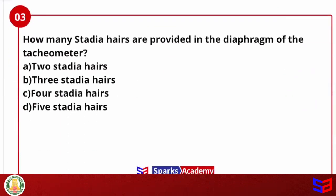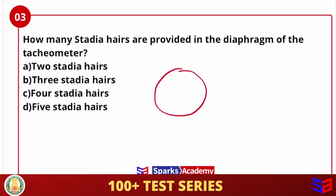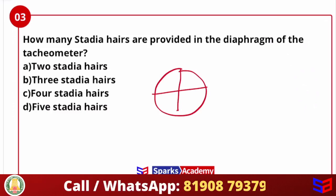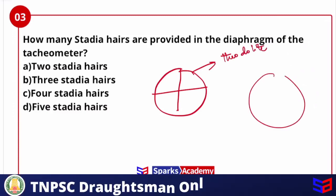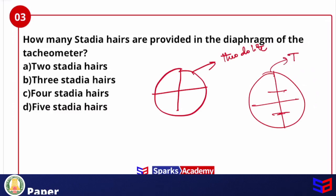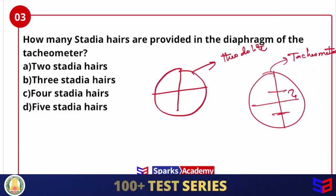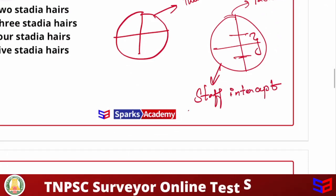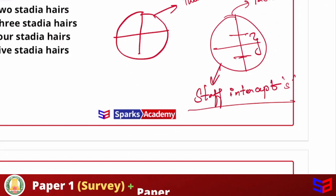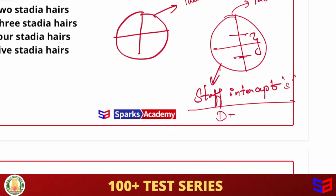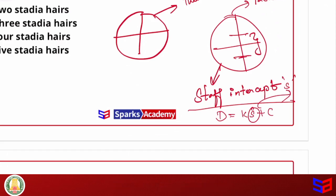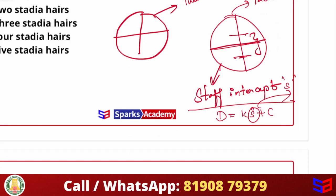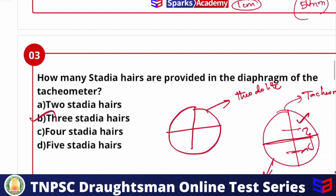Next question: how many stadia hairs are provided in the diaphragm of a tachymeter? The theodolite is the basis of the tachymeter and it has horizontal and vertical hair. In a tachymeter, two extra horizontal stadia hairs are present in addition to the standard one. Using these stadia hairs, we get the staff intercept and calculate horizontal distance using D = Ks + C. So total stadia hairs are 3. The answer is 3 stadia hairs.